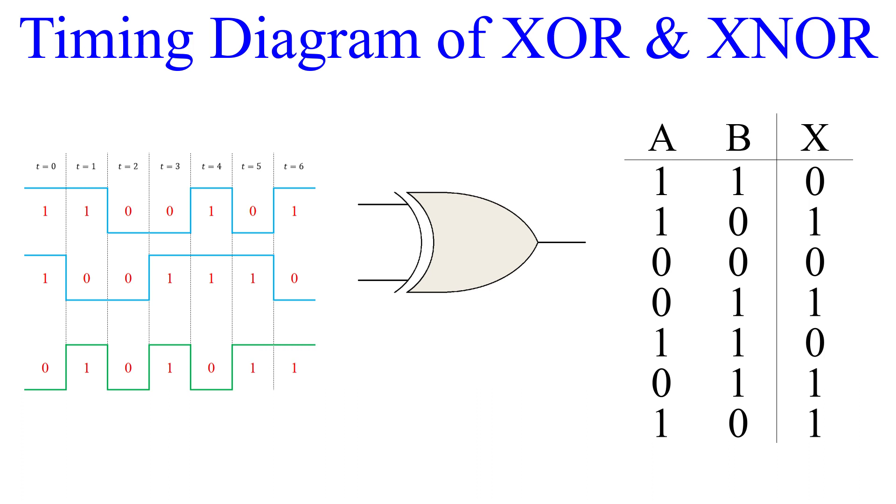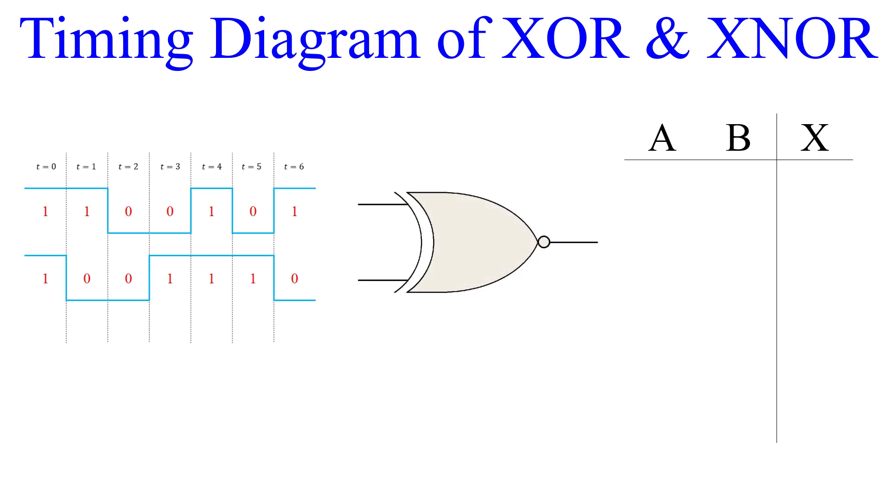That wasn't too bad, right? We should be getting pretty good at this by now. So let's use the exact same inputs, but using the XNOR gate. Here's the timing diagram. If you want to try it yourself, go ahead and pause the video and see if we can get the same thing. Okay, are you back yet?